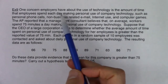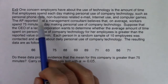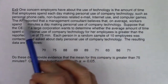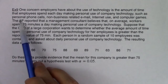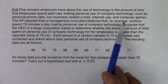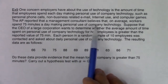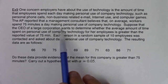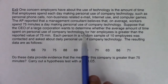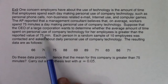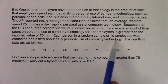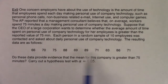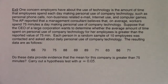One concern employers have about technology is the amount of time employees spend each day making personal use of company technology — personal phone calls, non-business email, internet use, and computer games. The Associated Press reported that a management consultant believes that on average, workers spend 75 minutes a day on personal use of company technology. The CEO of a large corporation wants to determine whether the average for her employees is greater than 75 minutes. Carry out a hypothesis test with a 5% alpha level.